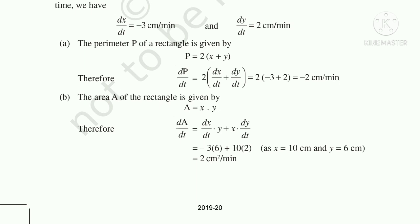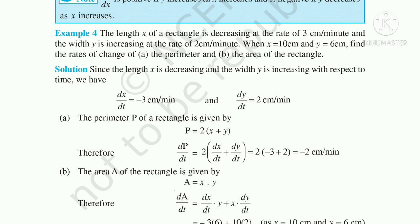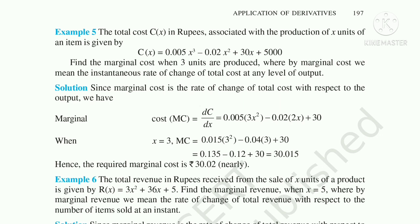For the area of the rectangle: A = x · y. Differentiating with respect to time using the product rule: dA/dt = y · dx/dt + x · dy/dt. Substituting the values of dx/dt = −3 and dy/dt = 2, the answer is 2 cm²/min. The key point is to note which quantity is increasing (positive) and which is decreasing (negative).